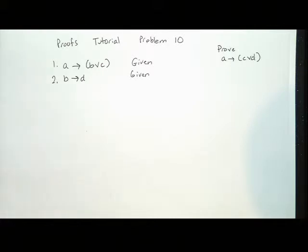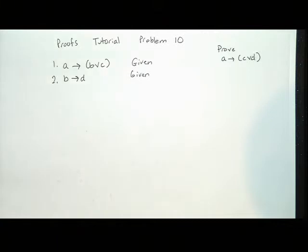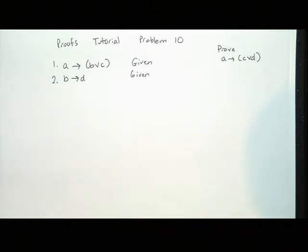Here's problem 10 from the Novanet Proofs tutorial. We are given A implies the quantity B or C, and B implies D are two givens. We're trying to prove A implies the quantity C or D. The first step when trying a direct proof is to look for a pattern in the proof statement and see if we can match that pattern somewhere in the givens. Look for a pattern, write down what you've found, and figure out which line it's on.